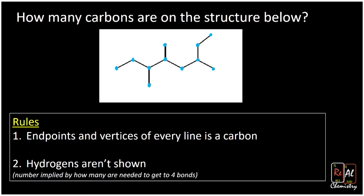Think about drawing that molecule without the line-angle structure — it would be a real pain. In fact, you're going to get to a point in your study of organic chemistry where you're like, if you make me draw that expanded structure, I'm going to lose my mind. Nobody wants to do it — it just takes way too long. So we've counted the carbons and decided there were eleven total carbons.